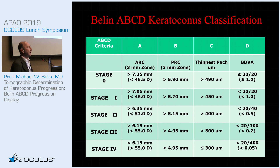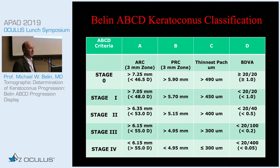About two years ago we came out with a new classification system called the ABCD classification. The existing classification was a 70-year-old outdated system based only on optical pachymetry and keratometry readings, and didn't look at any of the other anatomical layers, particularly the posterior surface. The ABCD classification allows anatomical grading of the anterior surface, the posterior surface, corneal thickness, and distance visual acuity.